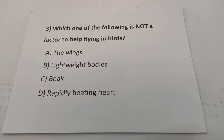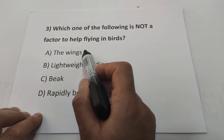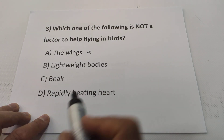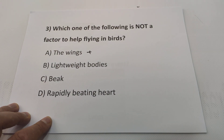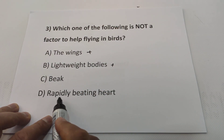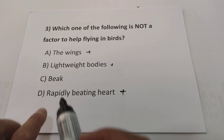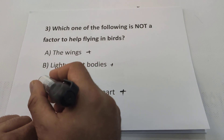Question three: which of the following is not a property of flying birds? They have wings — of course, very important for flying. They have lightweight bodies because they have hollow bones — that is true. Their heart beating increases up to 400 times when they fly. Having a big beak is not a property for flying — it is for eating or catching prey. So the answer will be C.